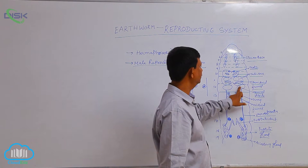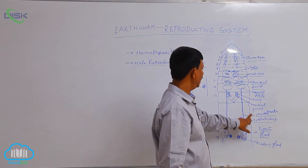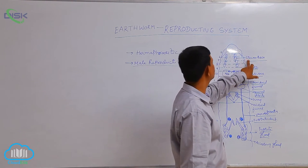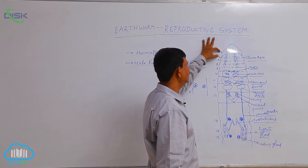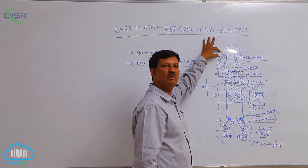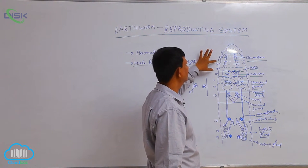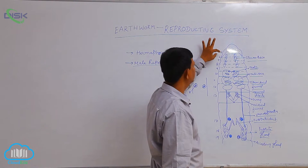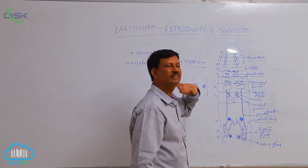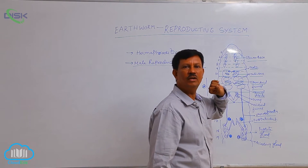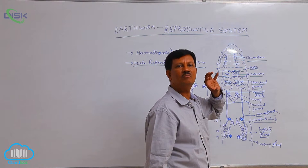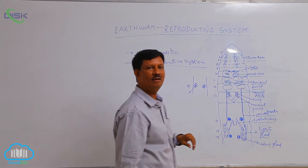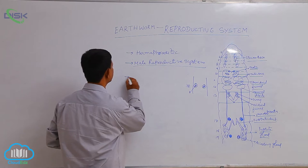The important structures of the male reproductive system are testes, spermiducal funnels, seminal vesicles, Vasa Differentia, and prostatic glands. In addition, four pairs of spermathecae are present. The first pair is in the 6th segment, attached to the 5/6th septum; the second pair at 6/7th; the third pair at 7/8th; and the fourth at 8/9th septum. These four pairs are situated in the 6th, 7th, 8th, and 9th segments. Their main function is to collect sperms from another earthworm during copulation and store them.